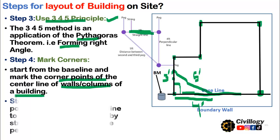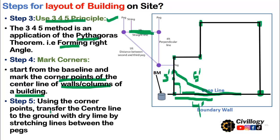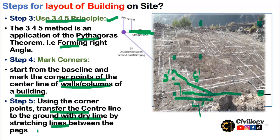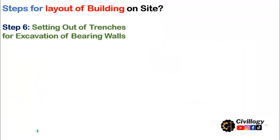The fifth step is to transfer the center line to the ground. Using the established corner points, transfer the center lines to the ground surface using a dry line or plaster of Paris by stretching lines between the pegs. This marks out the outlines for excavation purposes.